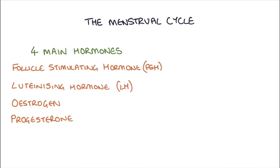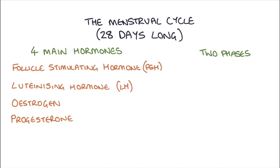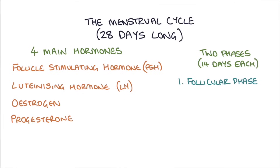The second thing to understand is that there are two phases of the menstrual cycle. The typical menstrual cycle is 28 days long and each phase is 14 days long. The first phase is the follicular phase, called this because the egg — which we also call the ovum — is inside a follicle that's developing.